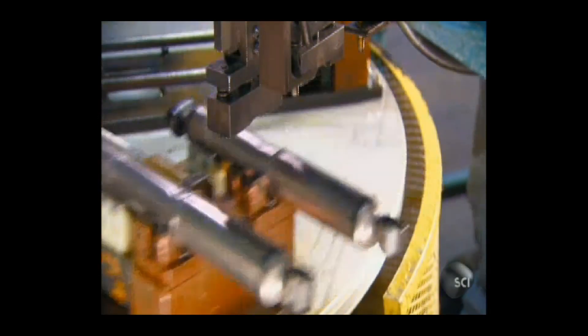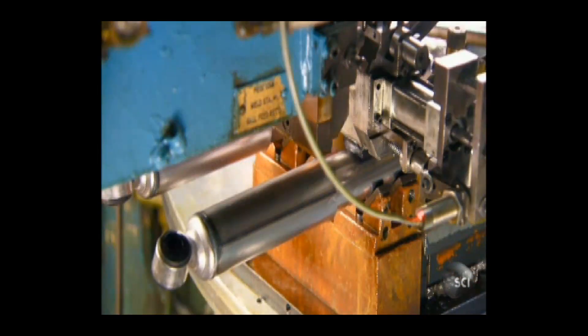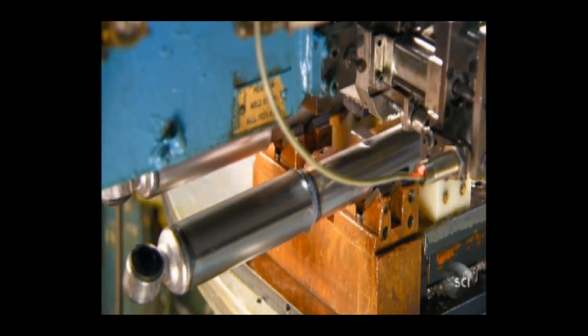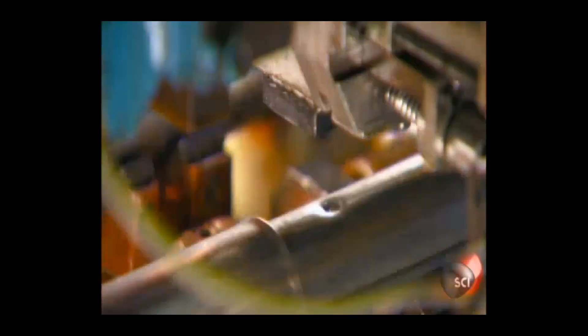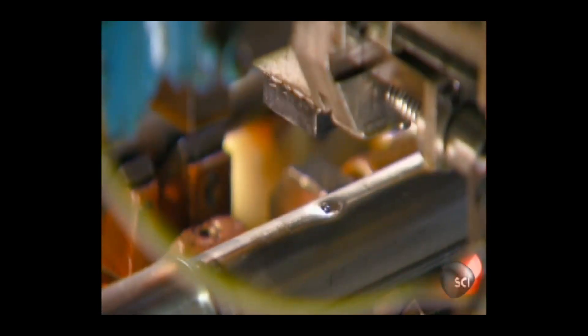Now it's on to an automated carousel. Robots pierce a hole in each shock and inject nitrogen gas to prevent the oil inside from foaming. After injection, the robot seals the hole by welding on a tiny steel ball.